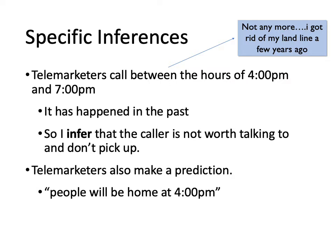So the inference is: this has happened in the past. I'm trying to make dinner, the phone rings, and I would either pick it up or we would have one of those old-fashioned answering machines. I usually didn't pick it up. I inferred that the caller was not worth talking to — using my past experience. Every time somebody called between 4 and 7, they weren't worth talking to. Every time it happened in the past, it was a telemarketer. That's an inference based on prior observations applied to a current situation.